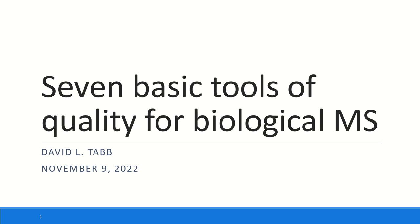Hi, I'm Dave Taub, and today I'm going to talk with you about the seven basic tools of quality for biological mass spectrometry. This is based on a talk that I did at the International Mass Spectrometry Conference as a tutorial for people learning how to do quality control in mass spectrometry. A lot of what I'm talking about has direct relationship to core facilities in biological mass spectrometry, but it also has bearing on graduate students who are trying to do the work that will get them published and graduated. I think this talk has a little bit of value for everybody.